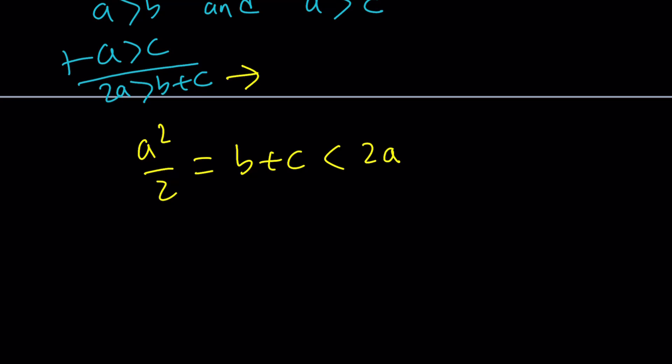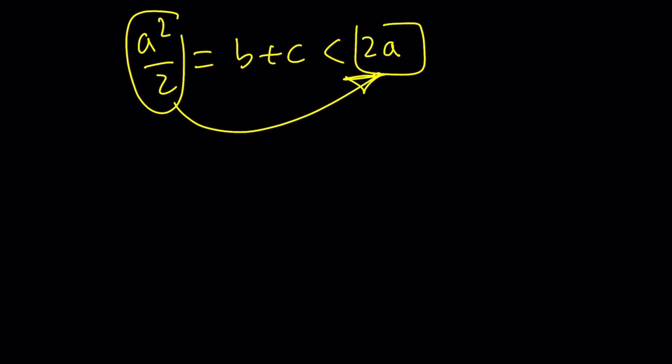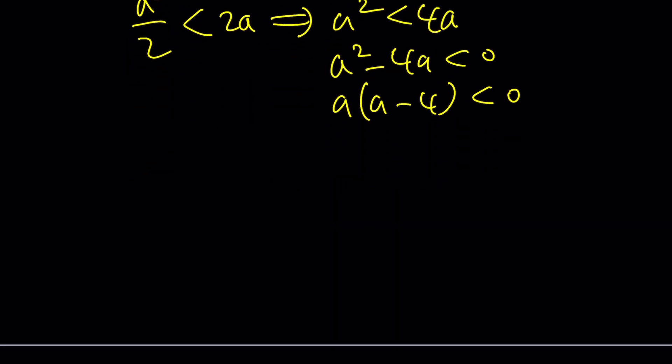Now, forget about the b plus c in the middle and directly use these two things. Obviously, we have this interesting transitive property or substitution, whatever. a squared over 2 is less than 2a, which means a squared is less than 4a. But what does that mean? It just means a squared minus 4 is less than 0. a times a minus 4 is less than 0.